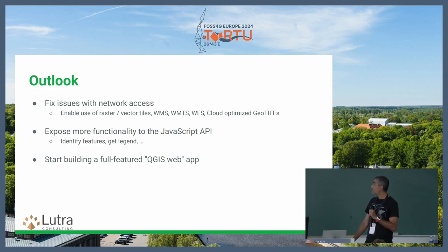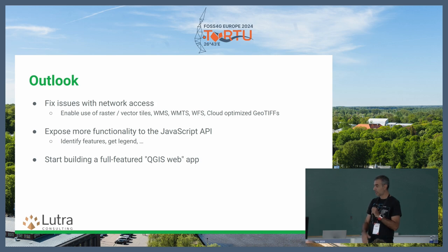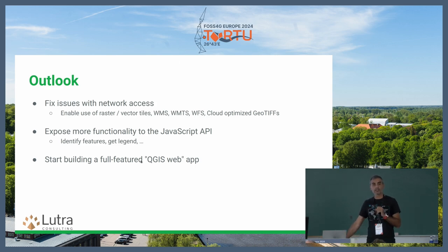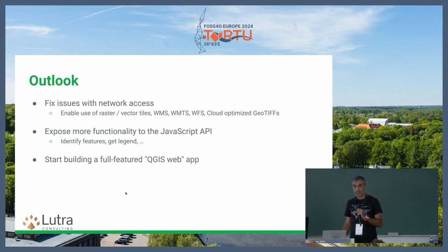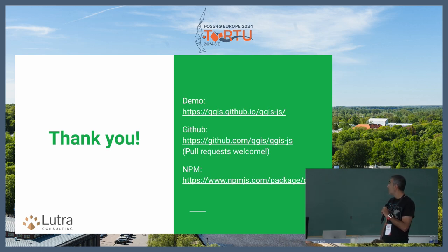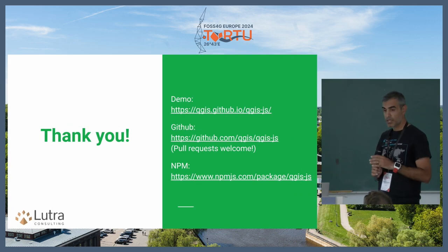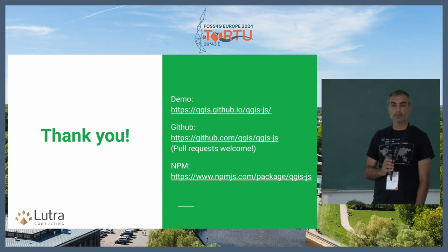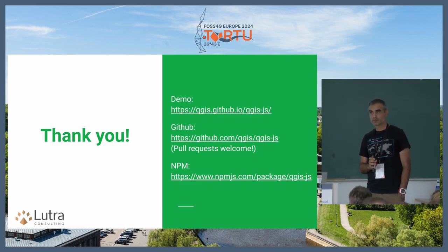Once we have those, we can start building the identify feature, get legend, and more functions. You could potentially replace your web map through QGIS server and just use the app directly in your browser. These are the links — the demo I've shown you, you can try it yourself. There is the GitHub repo and the NPM packages where you can download and play around with it.